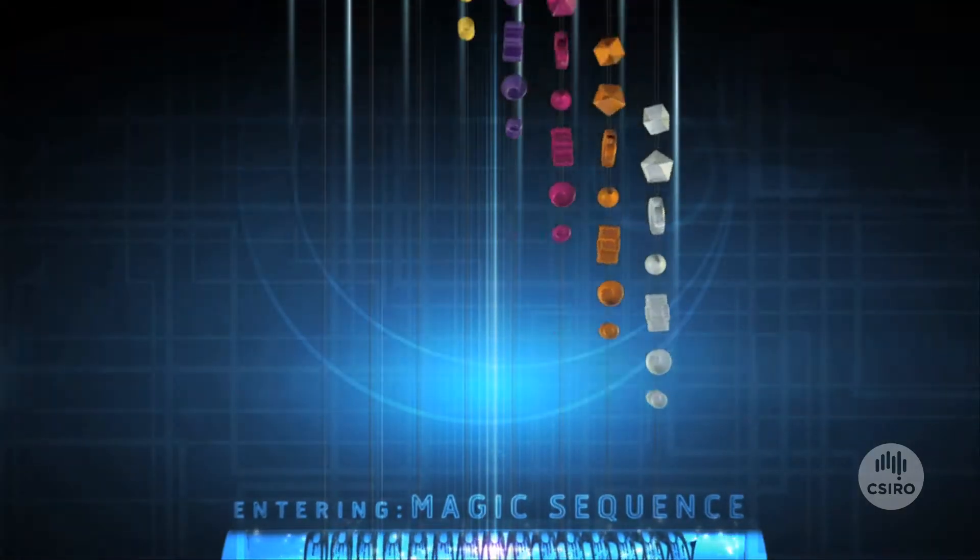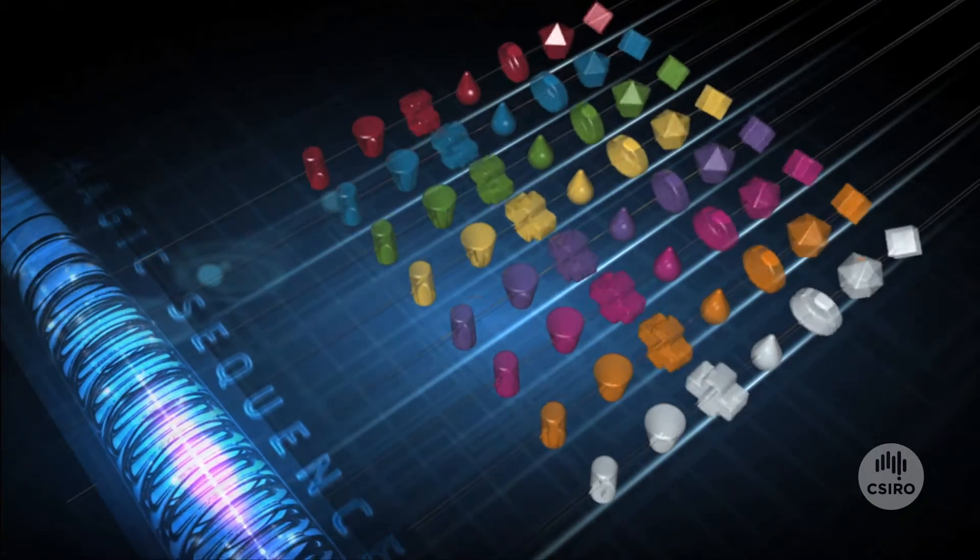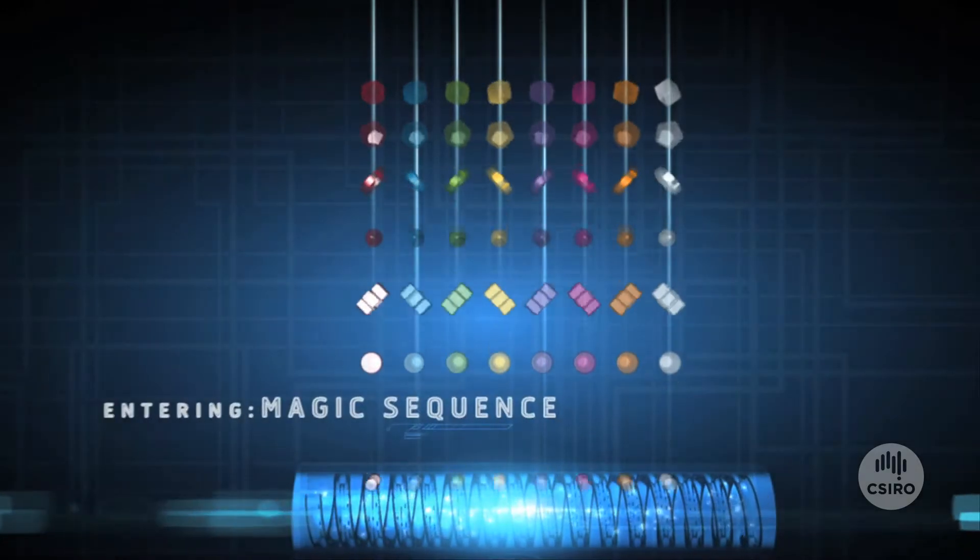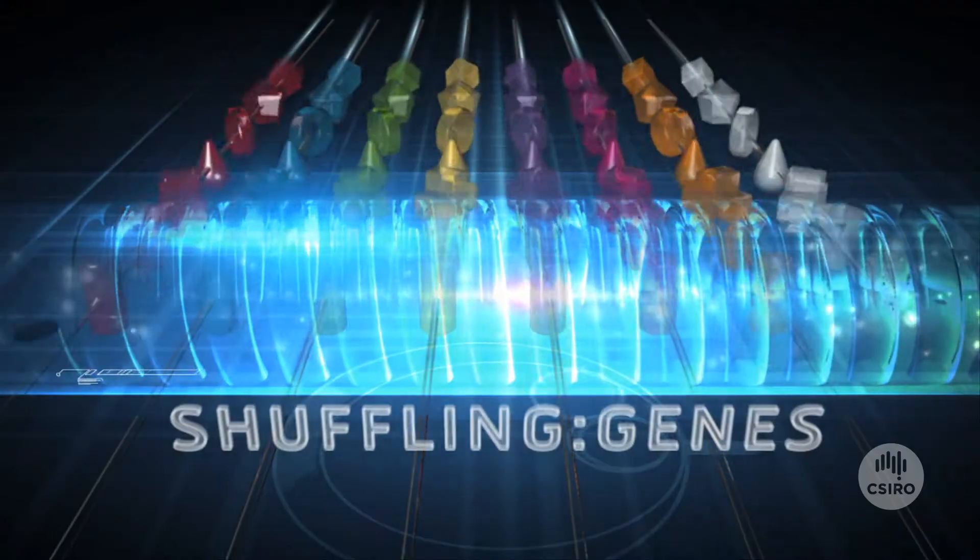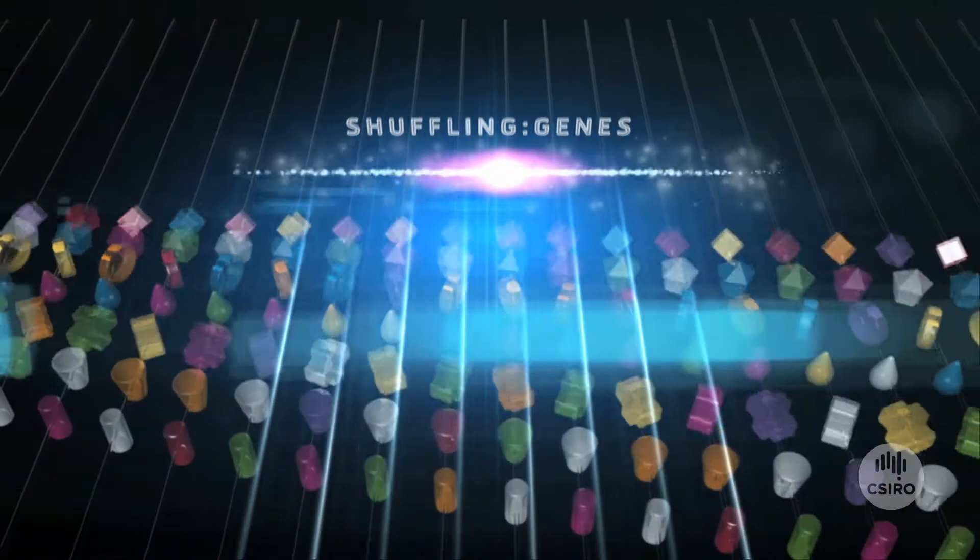The first major advantage of MAGIC is that we can very efficiently shuffle the genes between different varieties of wheat, enabling us to identify very accurately the order of thousands of genes along a chromosome.